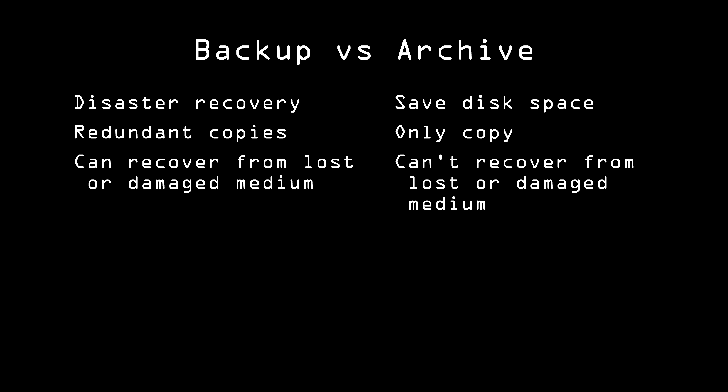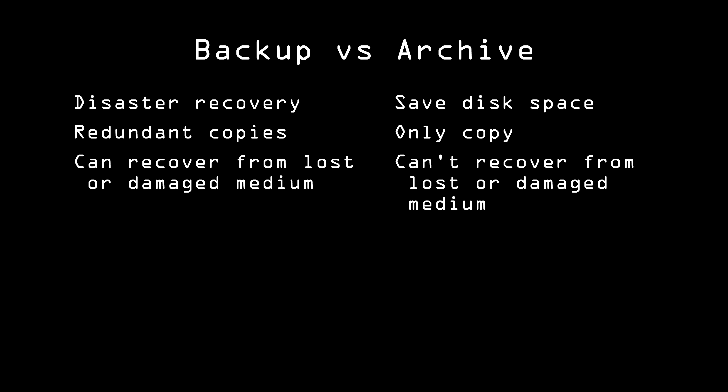First, let's distinguish between a backup and an archive. An archive is what you do to free up disk space while still keeping copies of older files by moving them to some kind of alternate storage medium, usually offline. But if you lost that particular storage medium — the external hard drive or whatever it was put on — then you've lost your archive data, unless you've also backed it up. A backup is a redundant copy, so you have two copies of your files in different places. If something happens to the storage medium, or a file gets accidentally deleted or corrupted, you have another copy. It's this redundancy that makes something a backup.